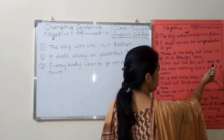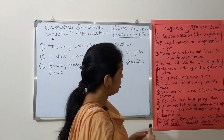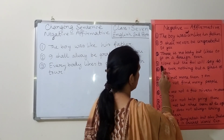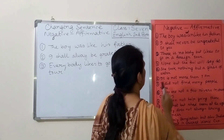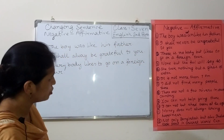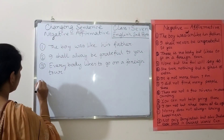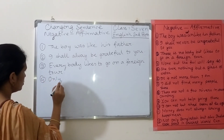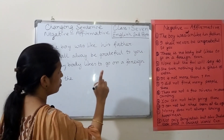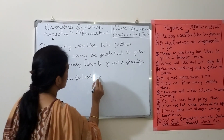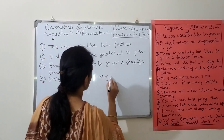Number four: 'None but the fool will say so.' Here we can see 'none but,' which refers to a person. That means 'none but' refers to a specific person, so we have to use 'only.' The affirmative sentence is: 'Only the fool will say so.'